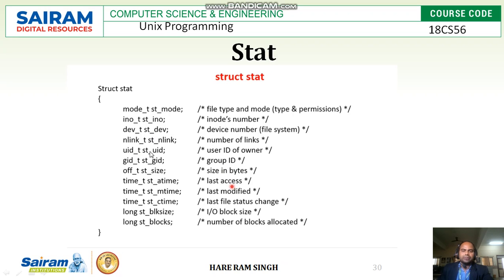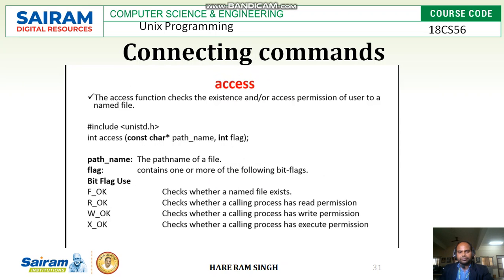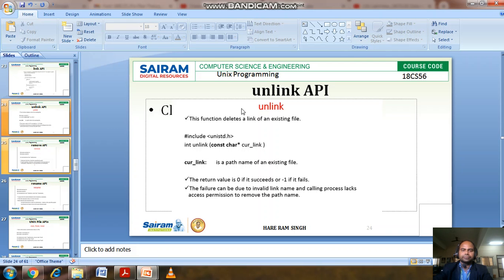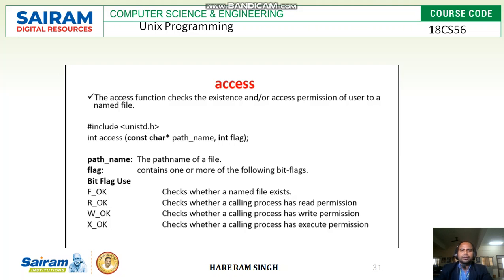All of this information about a file can be retrieved using the fstat, stat, and lstat APIs. The next API is the access API. The access function checks the existence and access permissions of a user to a named file — whether the file exists, and what read, write, and execute permissions it has.